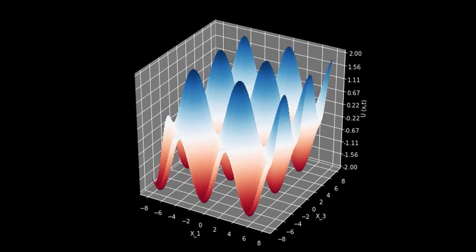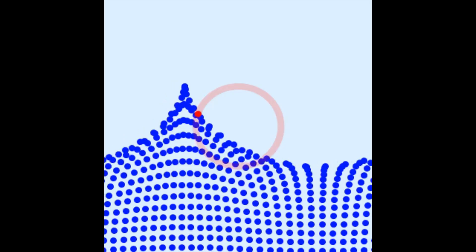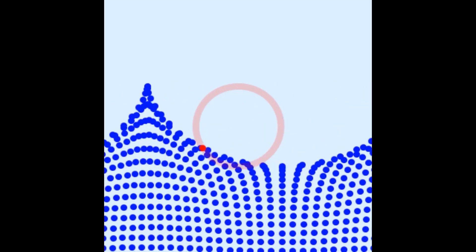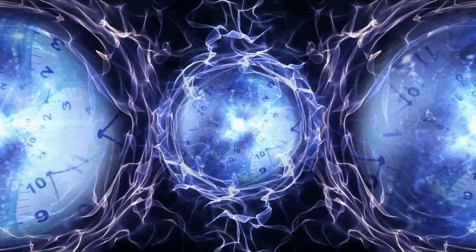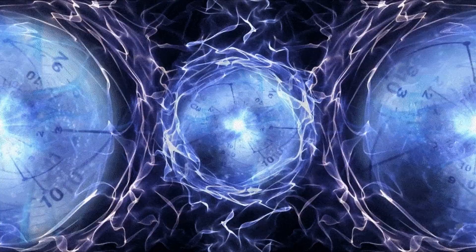For instance, in Markov chain Monte Carlo (MCMC) simulations, understanding the spectral gap helps determine how long the program needs to run for valid results. A larger spectral gap implies faster convergence to equilibrium, while a smaller gap leads to slower mixing.